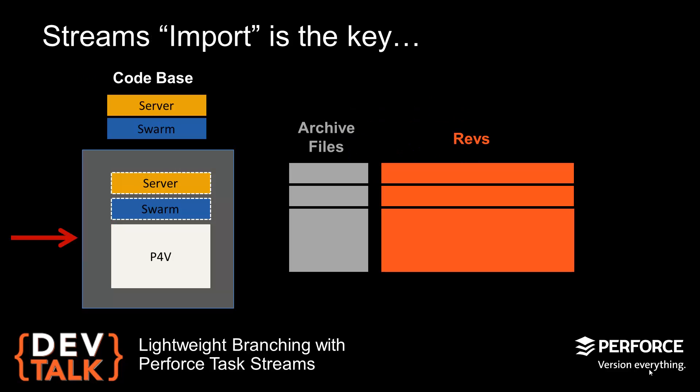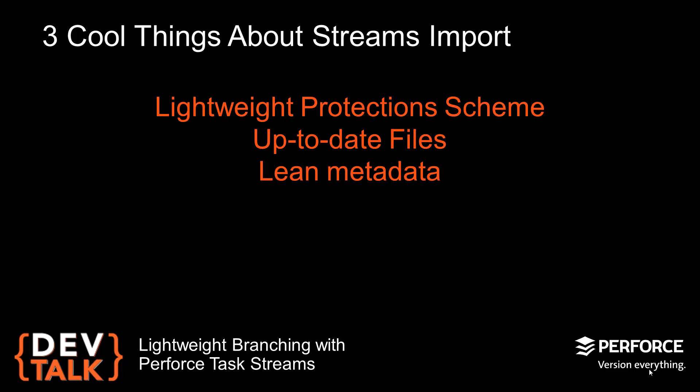The P4V team is working on adding Swarm into P4V, so we needed to use some of the server and Swarm code. We didn't actually need to touch their code — we just need to link it in and use the headers. I didn't want any of the P4V developers accidentally changing the server or Swarm code, so I configured P4V Stream to import the Swarm and Server code. Import totally rocks. First, it lets you set up the server and Swarm code as read-only in the P4V Stream without mucking with the protections table. Import serves as a lightweight protection scheme without having to have special admin privileges.